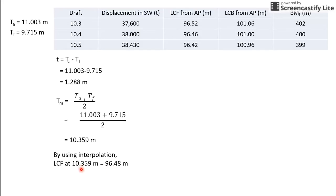Since my LCF is aft of midship of the vessel, I will use the formula T_1 = T_m + [(L/2 - LCF) × t / L] to get T_1 to be 10.4 meters.